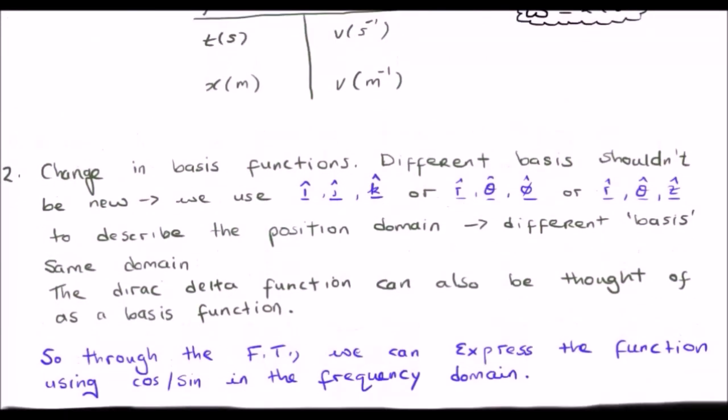The second thing which the Fourier transform does is it changes your basis functions. Now different basis shouldn't be new to you. We use, for example, i-hat j-hat k-hat, or r-hat θ-hat φ-hat, or r-hat θ-hat z-hat, to describe the position domain. So we have different basis functions or different basis vectors, but we have the same domain. We would talk about normal vectors, spherical coordinates, and cylindrical coordinates. So it shouldn't be new to you to express your coordinates using different basis vectors. And I'll discuss basis vectors in greater detail in the future. But my point is that we often transform using different functions or different vectors to express the same point in space.